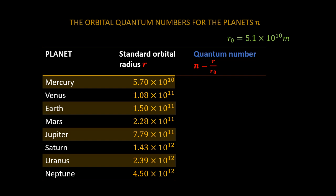The quantum number of Mercury is given by 5.7 exponential 10 divided by 5.1 exponential 10. Since n can only be a whole number, we round that down to 1. Next, we have 1.08 exponential 11 divided by 5.1 exponential 10, which gives us 2.1. So n is equal to 2 for Venus.